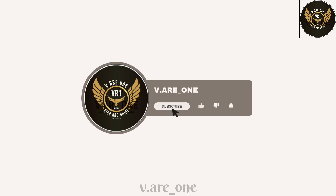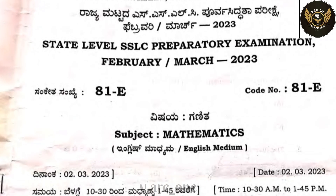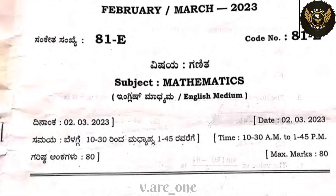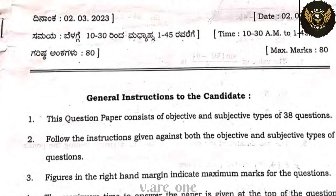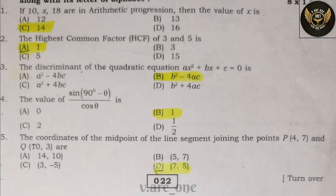Welcome everyone to our YouTube channel. We are going to discuss the State Level SSLC Preparatory Examination key answers. First question: if 10, x, 18 are in arithmetic progression, then the value of x is — answer: C, 14.